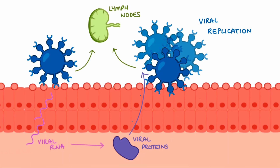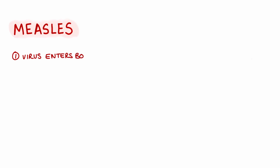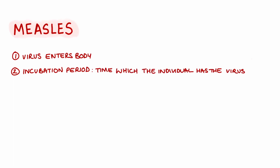Eventually the virus can then establish itself on the skin and other tissues such as the respiratory tract. Once the virus has entered the body, the whole process of replication and spreading to other parts of the body can take up to 14 days. This is known as the incubation period, which is a time in which an individual can have the virus but has not yet developed symptoms.